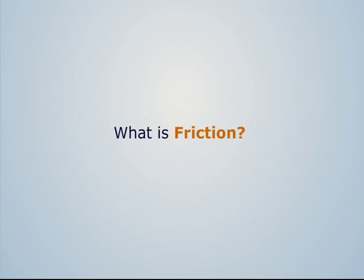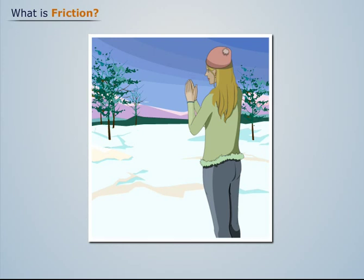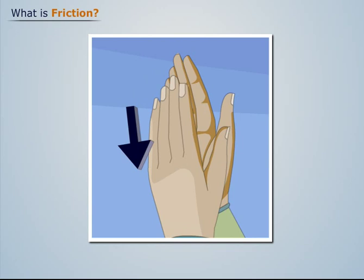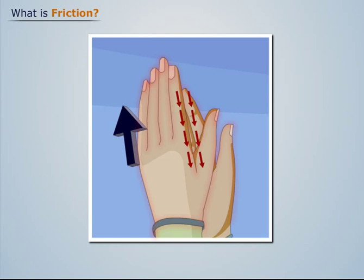What is friction? In cold season, you must have often rubbed your palms against each other to feel some warmth. You must have wondered how this heat is generated. This is because when we rub our palms together, an opposing force is produced on the surfaces of our palms, which then generates heat and we feel warm. This opposing force is known as friction.